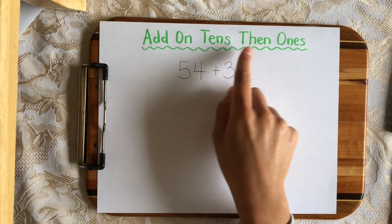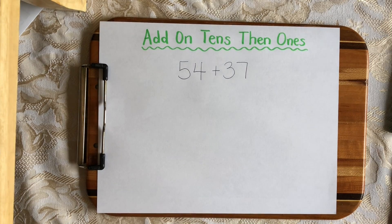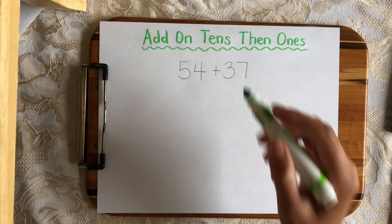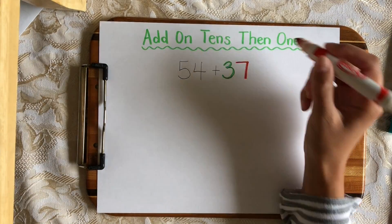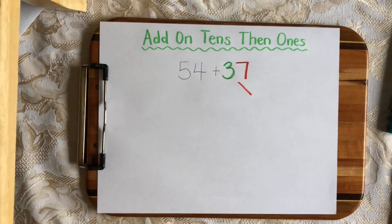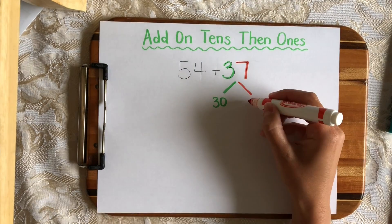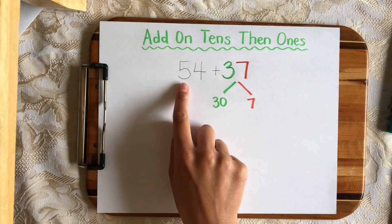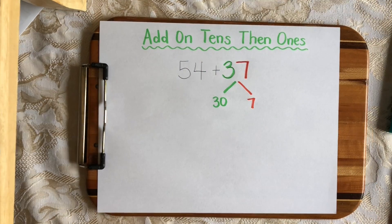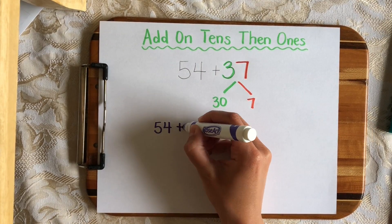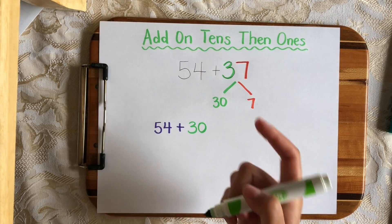This strategy is called add on tens, then ones. In this strategy, we're going to leave the first addend alone, and we're going to break apart the second addend into tens and ones. So 37 has 3 tens, or 30, and 7 ones. So when I break it apart, it's going to look like 30 and 7. Now I'm going to add on the tens for my second addend to the first addend first. 54 plus 30. And that is the add-on tens part of this strategy.